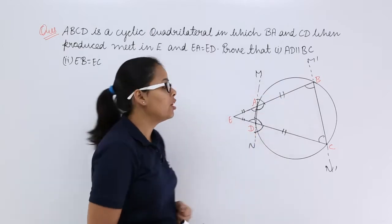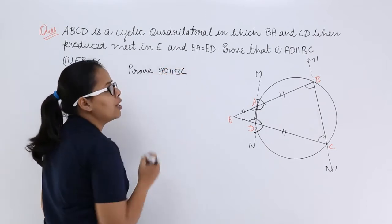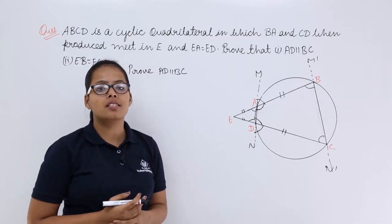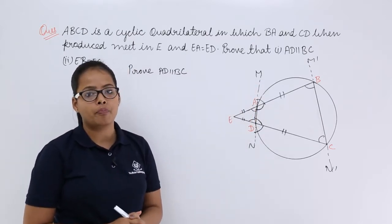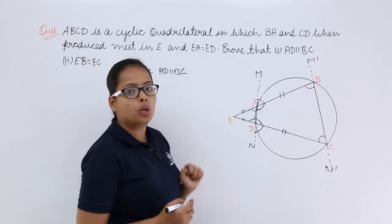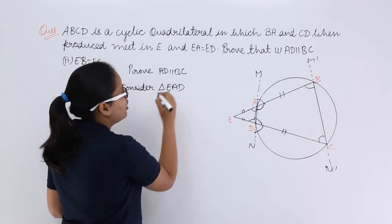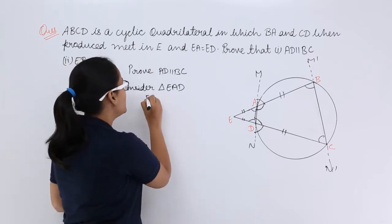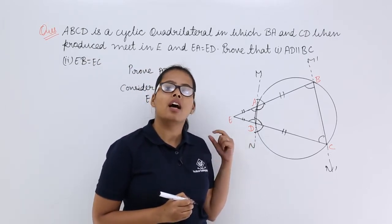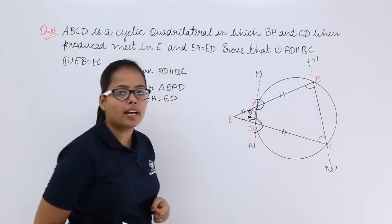Let's take the first part, where you need to prove that AD is parallel to BC. If you can prove that alternate internal angles between AD and BC are equal, then you can say AD is parallel to BC. Let's start with triangle EAD, because you have been given the condition that EA is equal to ED, which makes this an isosceles triangle.